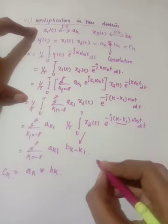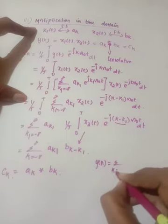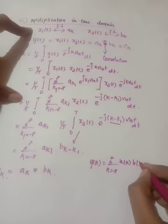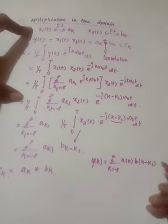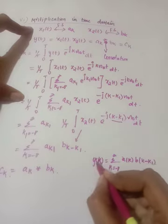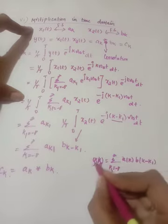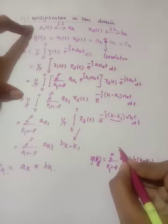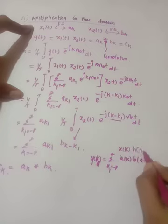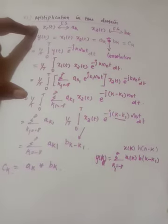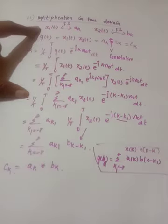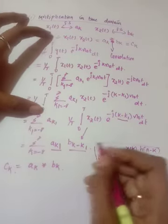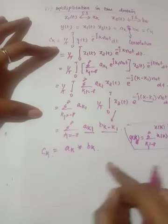Here we are dealing with discrete frequency. The convolution formula for a discrete signal y(k) = summation from k1=−∞ to ∞ of ak · b(k−k1). The convolution operation involves one signal as-is and the other reversed and shifted. Therefore ck = ak convolution bk.